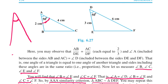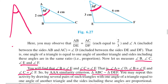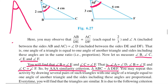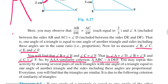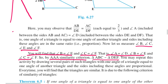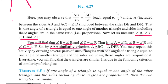In both triangles, angle A and angle D are included angles. Now let us observe that AB upon DE equals AC upon DF, and each is equal to 2 upon 3. Angle A, which is the included angle between AB and AC, is equal to angle D, which is the included angle between DE and DF. One angle of one triangle is equal to one angle of another triangle, and the sides including these angles are in the same ratio, i.e., proportion.